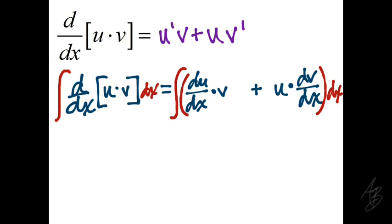When we take the derivative of u times v and then take the integral of that, we're going to get what we started with plus or minus some constant.